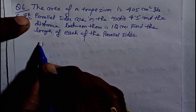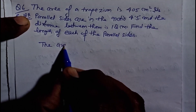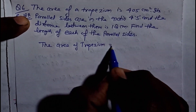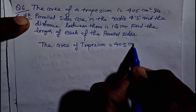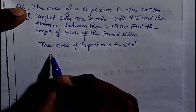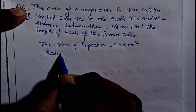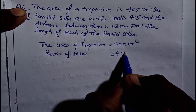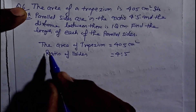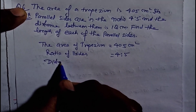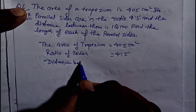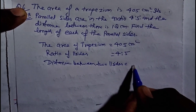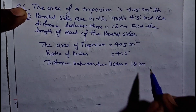The area of trapezium is equal to 405 cm square. And the ratio of the parallel sides is equal to 4 ratio 5. And the distance between two parallel sides is equal to 18 cm. Clear ho gaya?